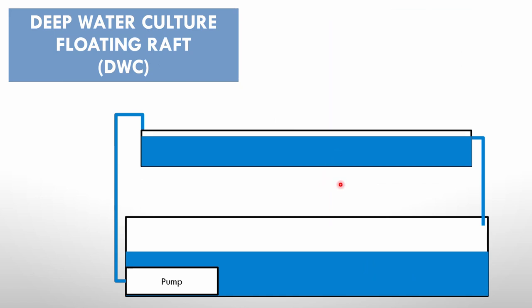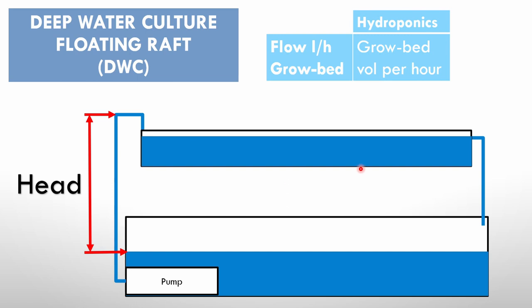The next system is our deep water culture, and your floating rafts will be on top here. Again, your head from the lowest level that the water can go in your sump to the highest point that the water must be lifted. Please remember that the highest point is not the start of your grow bed. The highest point is the highest point that your pipe goes up and then maybe down into your grow bed. So that's your highest point that will give you your head for your system, and the flow rate in this case is calculated at least your grow bed once per hour. So if this is a 100 liter grow bed, then your flow rate in this system must be 100 liters per hour.